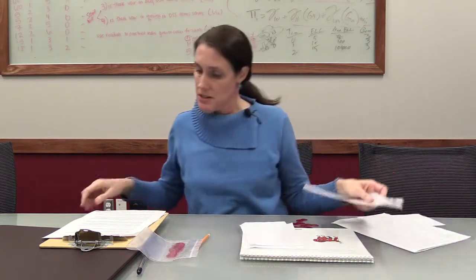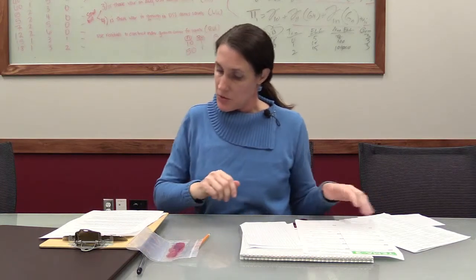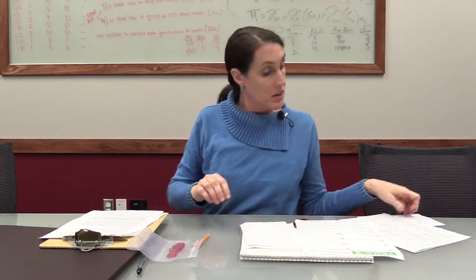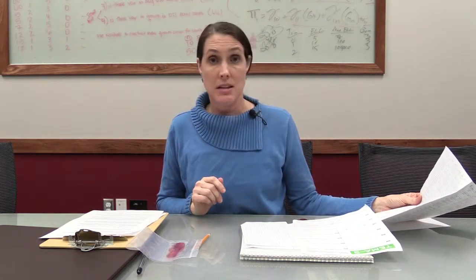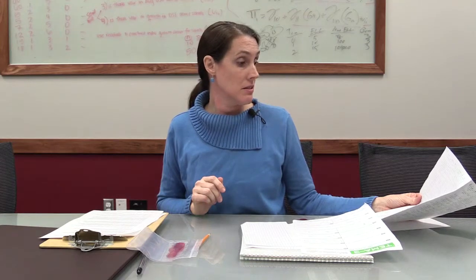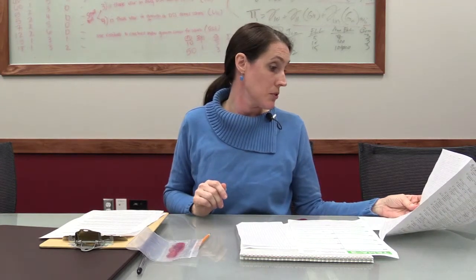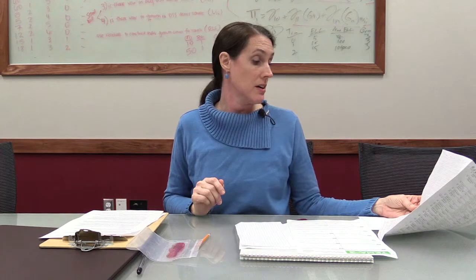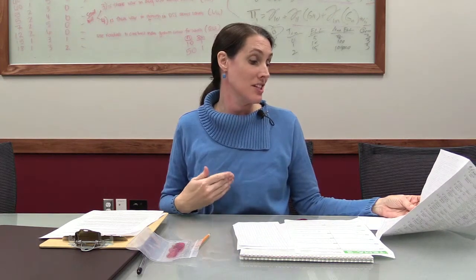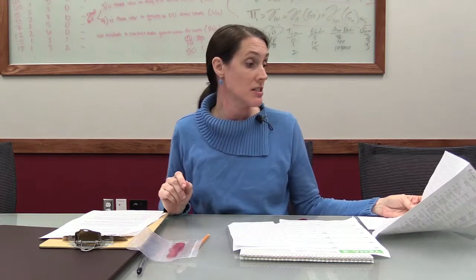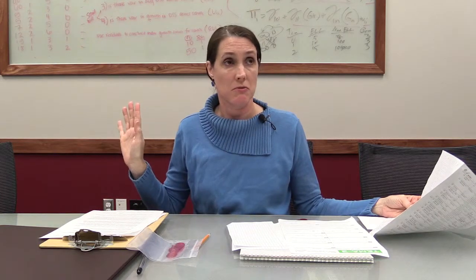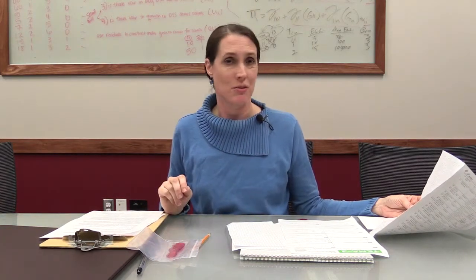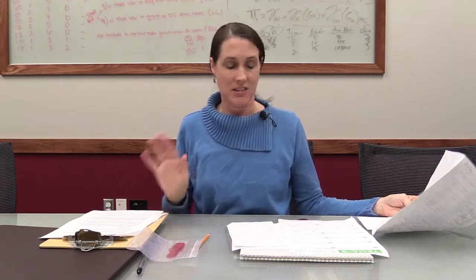Number 21 asks the child to count up as high as they can, but they only need to count to 21 to get credit. However, if you look at number 31, that item requires counting up to 42. So if the child is counting very well on number 21, just let them continue and see if they can get up to 40 or 50 — then you don't have to do number 31 again later, since they've already done their counting.